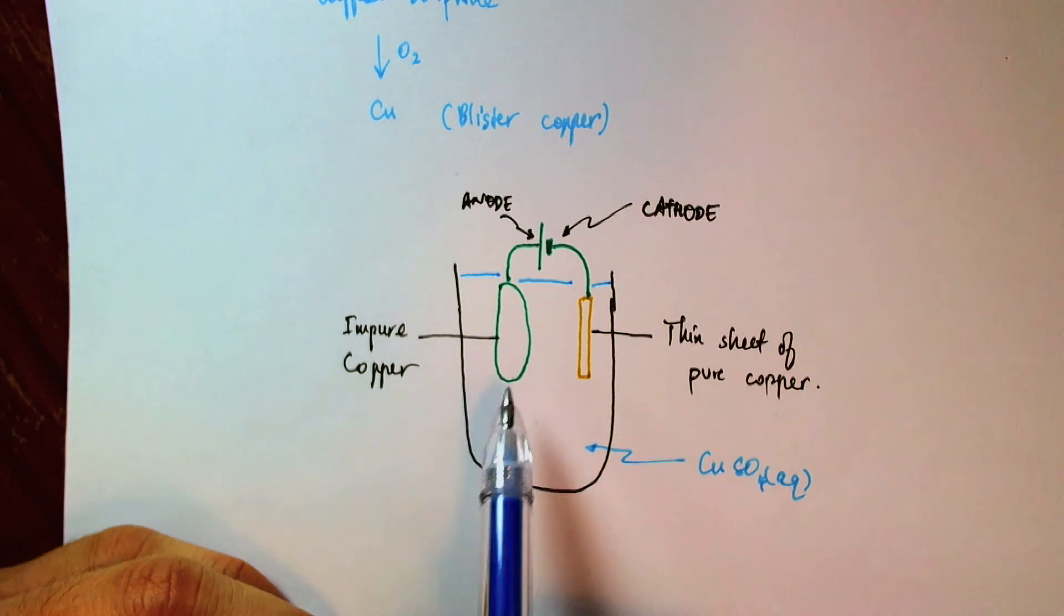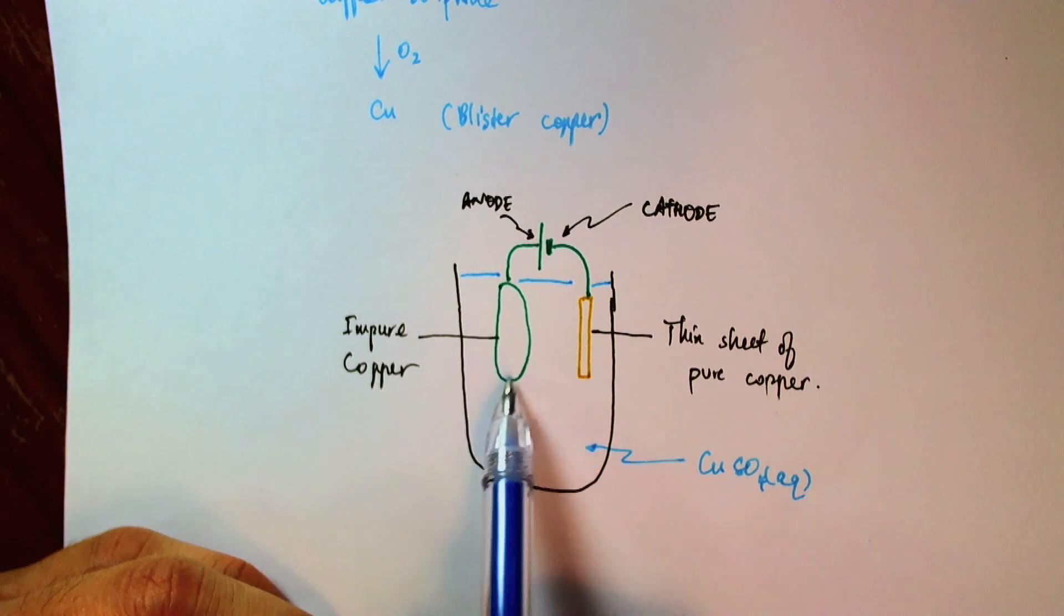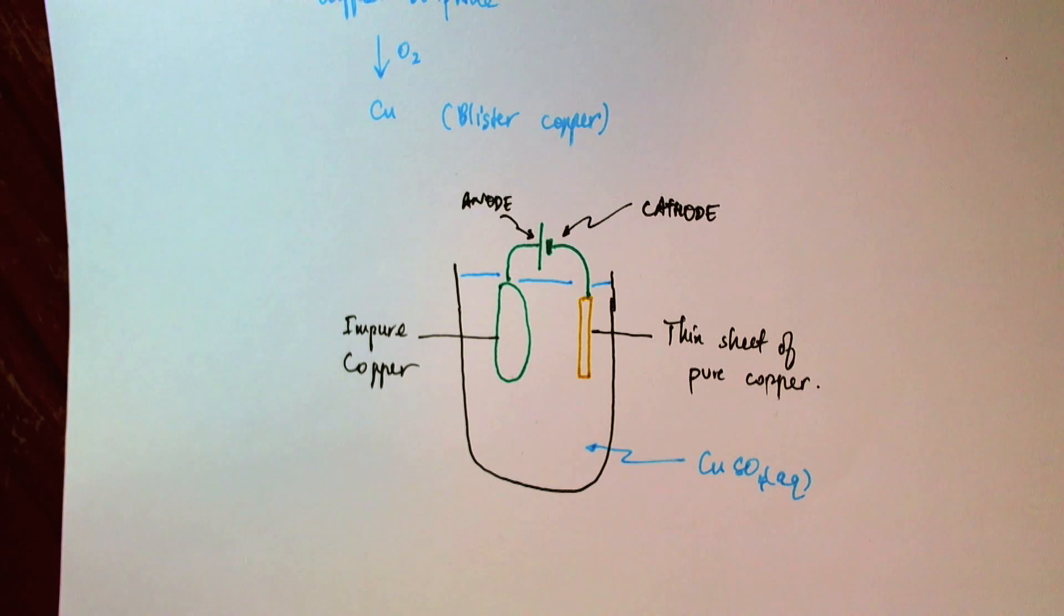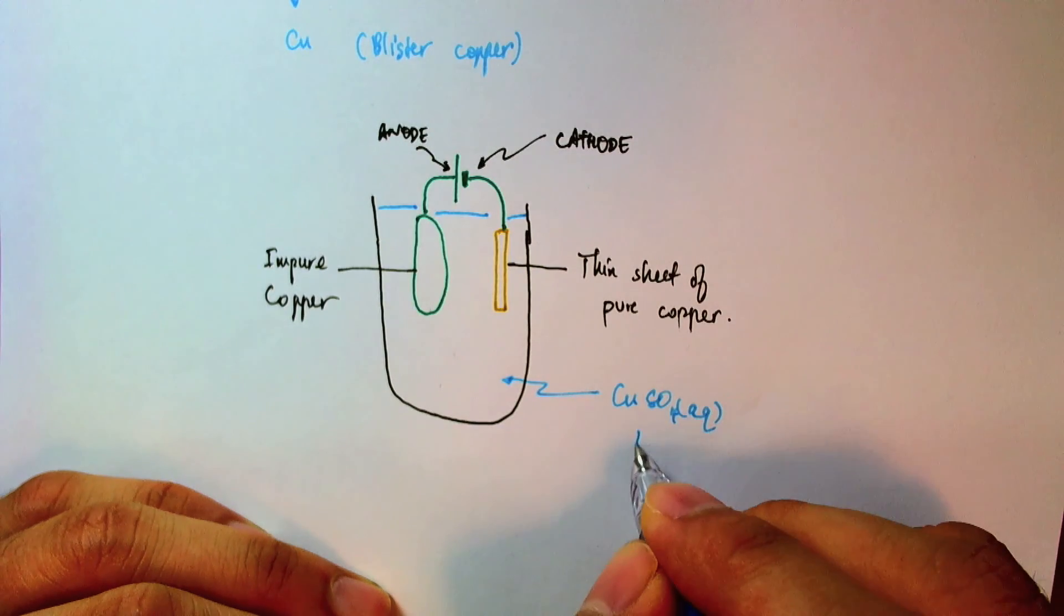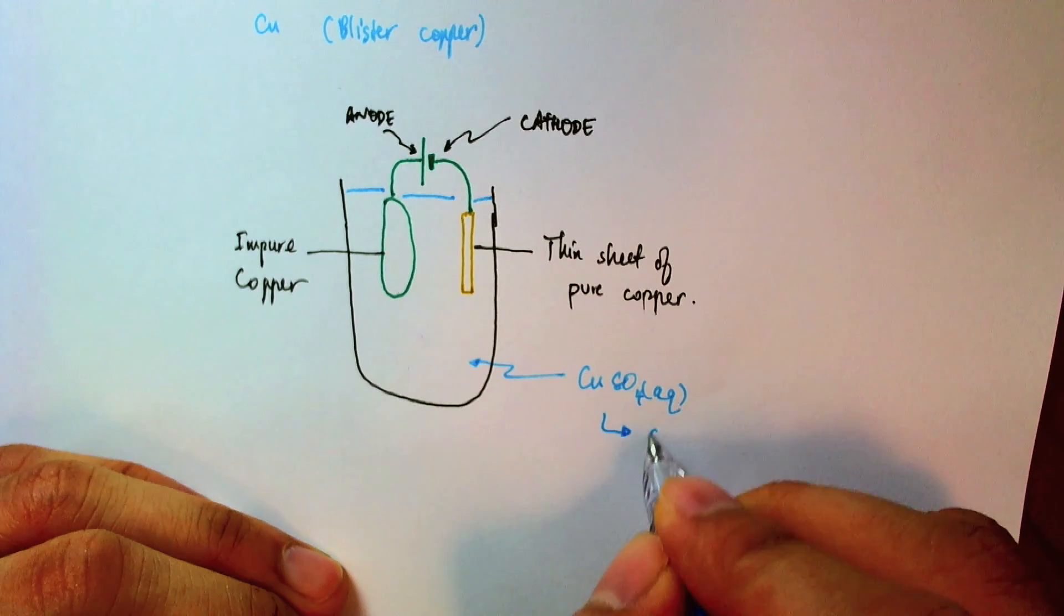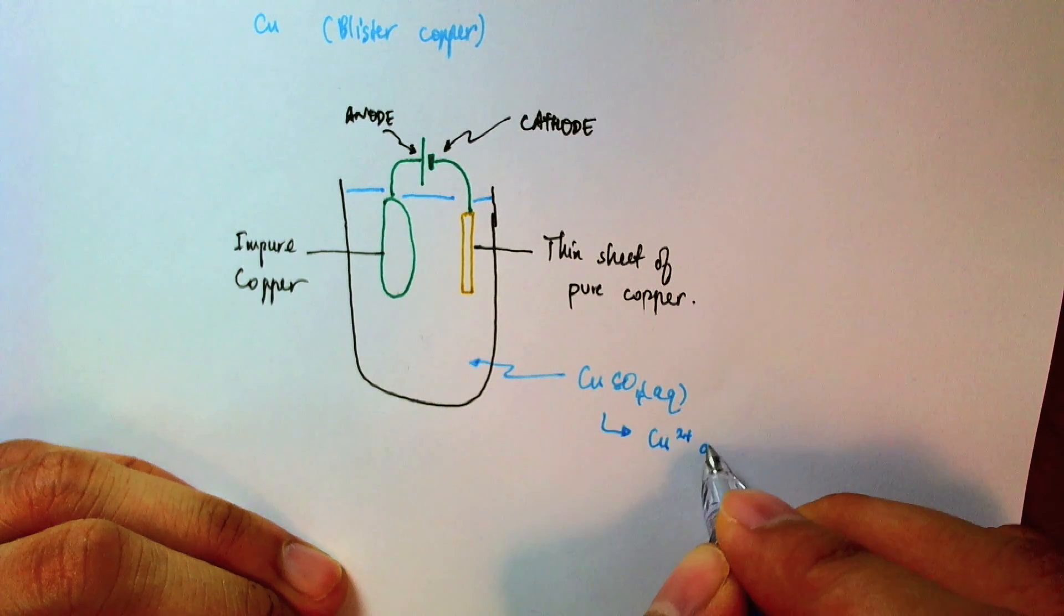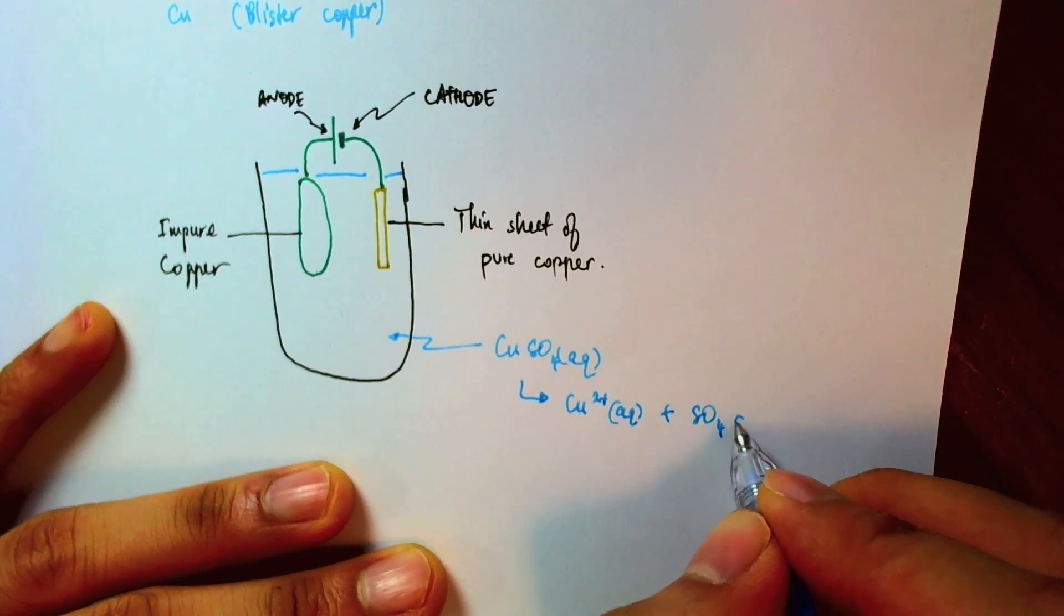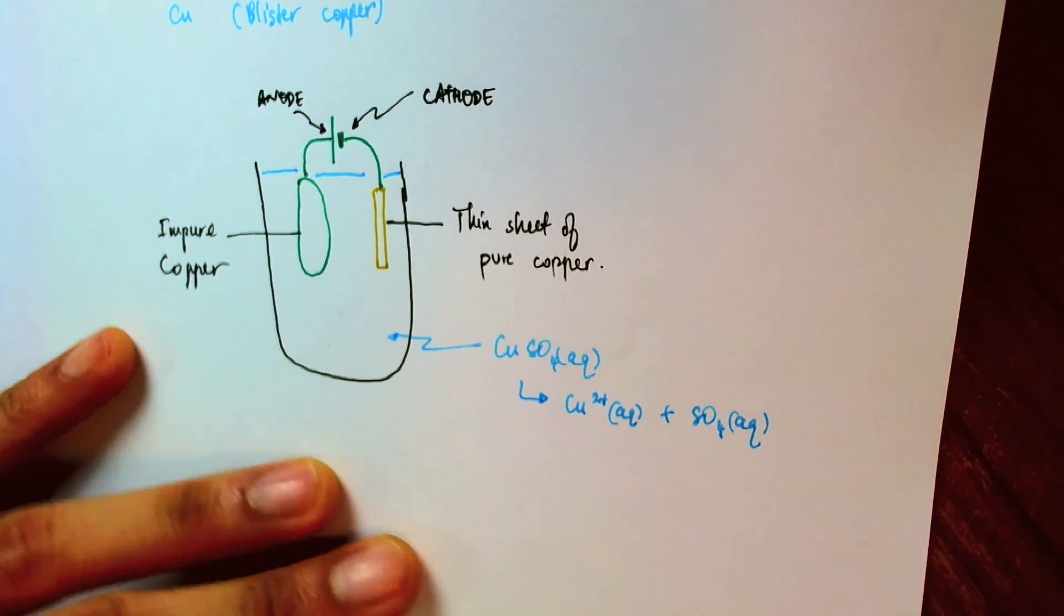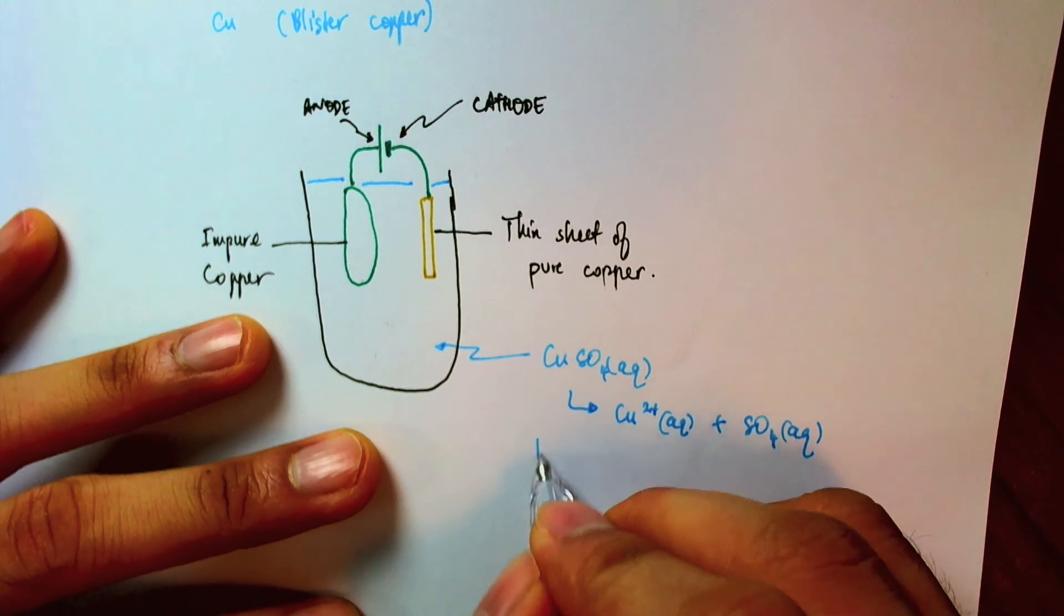Our goal is to take this block of impure copper and translate it into a block of pure copper. So let's take a look at what we have in our solution. The copper sulfate will dissociate into copper ions as well as sulfate ions. And once again,